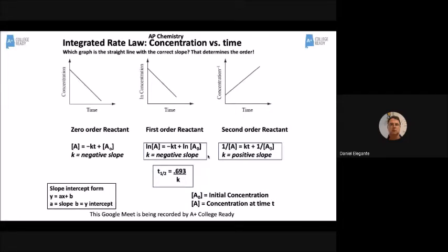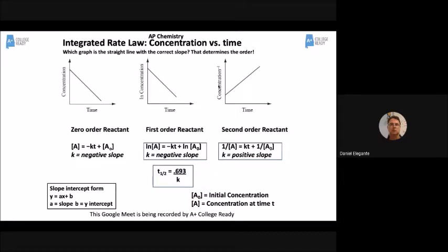If it's zeroth order, it'll look like the first graph — straight line, concentration versus time. For first order, that's the natural log graph. And if one over concentration gives a straight line, it's second order. You can't have all three be straight for one reaction — two will be curvy and one will be straight. Find the straight one and you've got your answer.